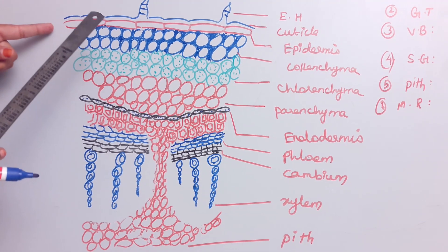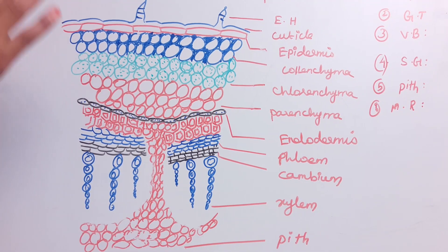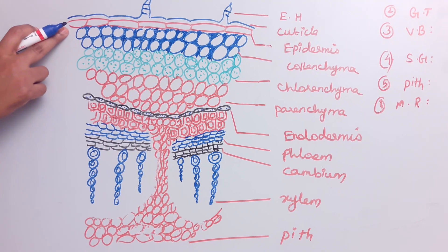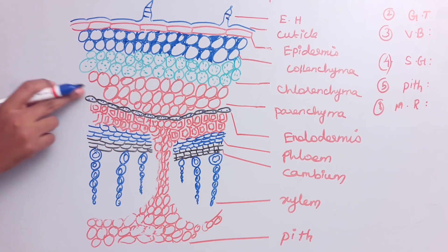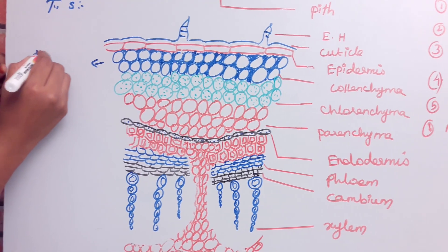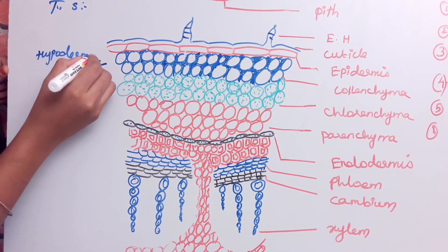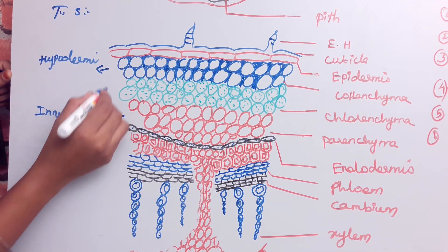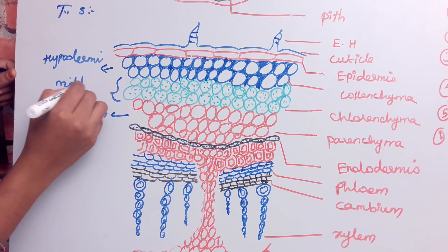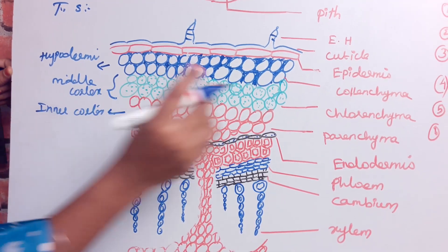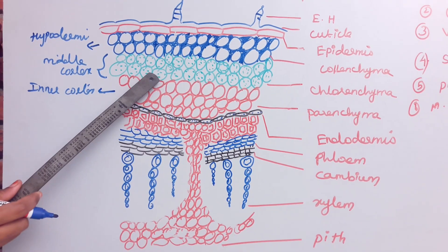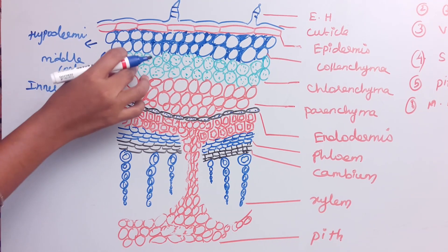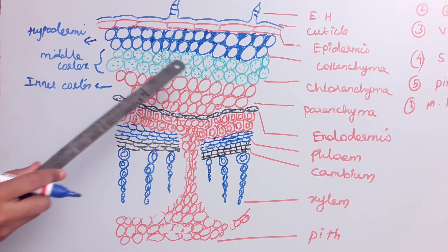The hypodermis provides mechanical support to the plant. Below the hypodermis is the middle cortex. The middle cortex is made up of chlorenchyma cells. Chlorenchyma is green in color because it contains chloroplasts, which carry out photosynthesis.